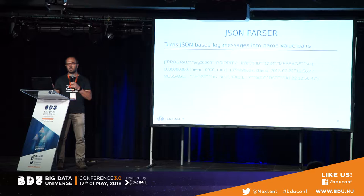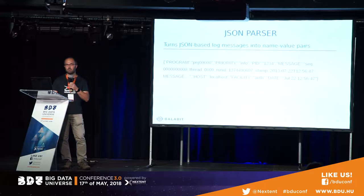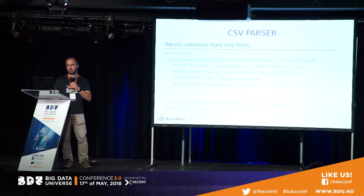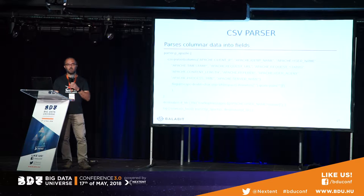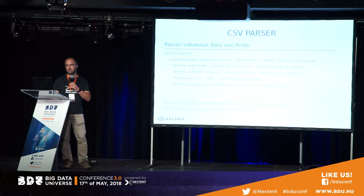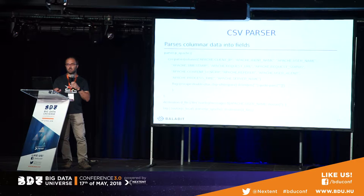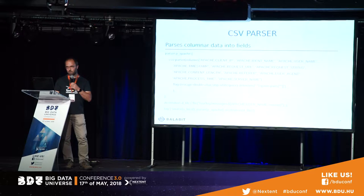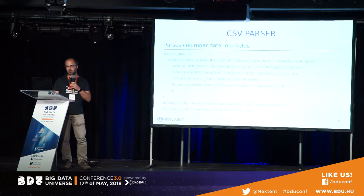The next parser is JSON. You might say it's already structured, but as long as we don't parse it from the collection point of view, it's just a long string. So you have to parse it to have the advantages of name-value pairs. We also have a CSV parser for columnar data — not just CSV files, but any columnar data like an Apache access log. In that example, you can see many fields extracted from an access log, and one of the extracted fields, the username, is used in the filename where data is saved.